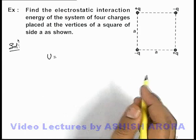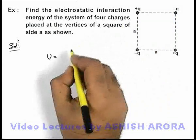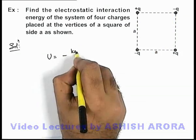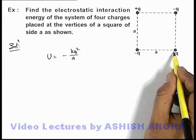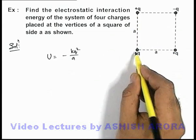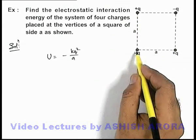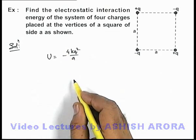So in this situation if for all pairs we calculate, for this pair the interaction energy is minus kq²/a. For this pair also it is minus kq²/a, for this pair it is the same, this is also the same. So for these 4 pairs the energy is same, so it can be written as minus 4kq²/a.